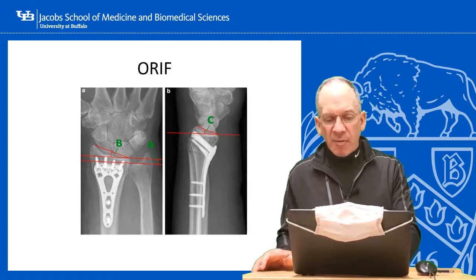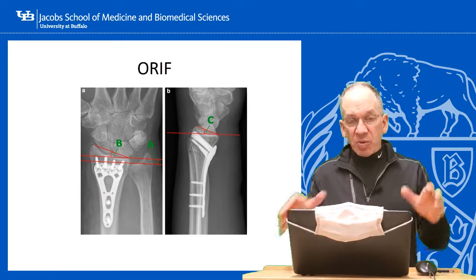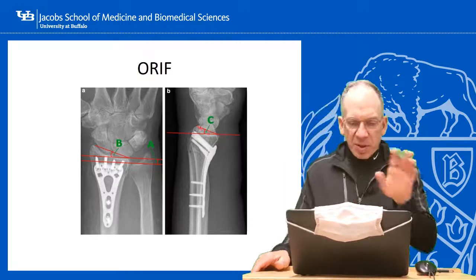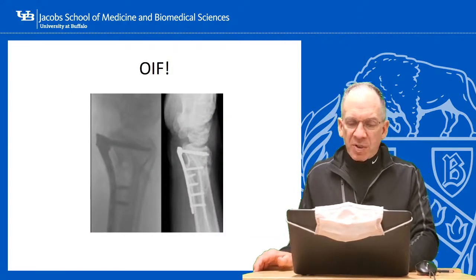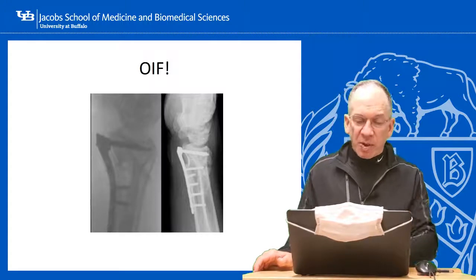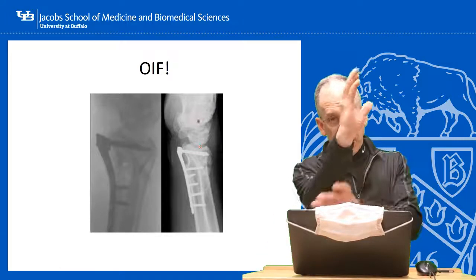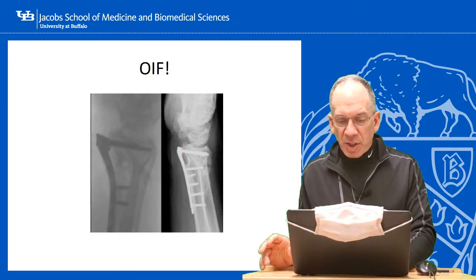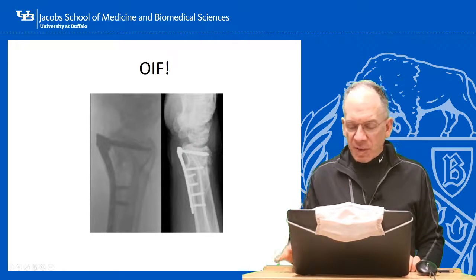This is known as ORIF — open reduction internal fixation. A locking plate with screws locks into the plate to provide a fixed angle holding the articular surface in place. This is a perfect reduction with anatomy completely restored. By contrast, an OIF — open internal fixation without reduction — means you stick a plate on without reducing the fracture, which is not a great idea. The plate ends up prominent and the deformity remains. We try to avoid the so-called OIF, or open internal fixation without the actual reduction.